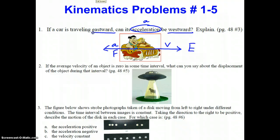Moving on to number two. If the average velocity of an object is zero in some time interval, average velocity V of an object is zero in some time interval, so that's T, what can you say about the displacement? And our symbol for displacement in physics, in AP physics, is X, of the object during that interval. So we're looking at the same time interval, T.